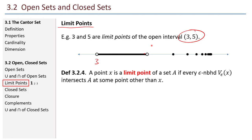Let's see that with this picture. Is 5 a limit point? I take every epsilon neighborhood about 5 and ask: does that epsilon neighborhood intersect my set at some point other than the point itself? This epsilon neighborhood does intersect the interval. If I make it smaller, that epsilon neighborhood also intersects the interval. No matter how small I make my epsilon neighborhoods, those neighborhoods will always contain just a little tiny bit of that interval from 3 to 5. So 5 is a limit point of the interval from 3 to 5.